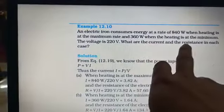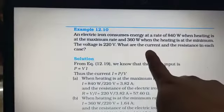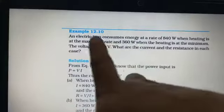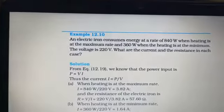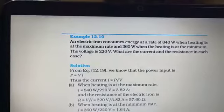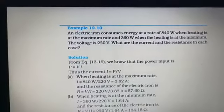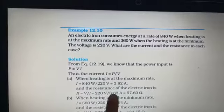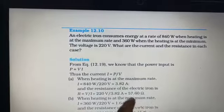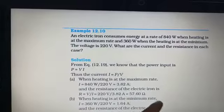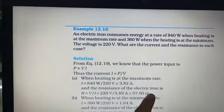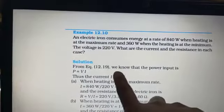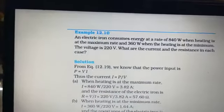Then they are asking, what are the current and the resistance in each case? Now, we have got the current is 3.82 ampere. We know the voltage is 220. Using V by I, Ohm's law, using V by I equals R, we will now find out the resistance. Resistance equals V by I, 220 divided by 3.82 equals 57.60 ohms. This will be the resistance when the heating is at the maximum rate, at the power of 840 watts.